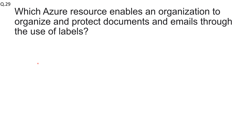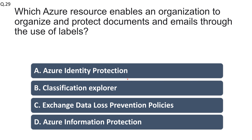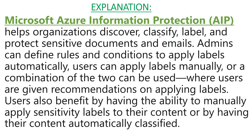Question number twenty-nine: which Azure resource enables an organization to organize and protect documents and emails through the use of labels? The right answer is Microsoft Azure Information Protection. It helps organizations discover, classify, label, and protect sensitive documents and emails. Admins can define rules to apply labels automatically, users can apply labels manually, or a combination of both can be used.